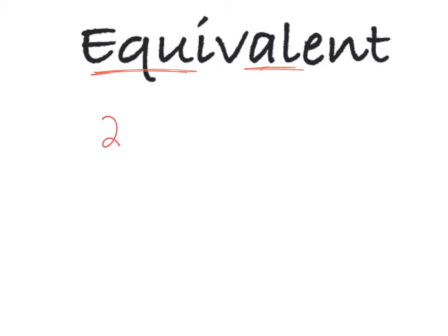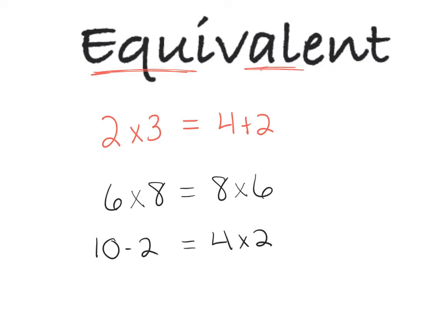For example, you could say 2 times 3 is equivalent to 4 plus 2 because they both equal 6. They're equivalent to one another. You could also say something like 6 times 8 is equivalent to 8 times 6. They don't look exactly the same, but they both represent the value of 48. You could also have something like 10 minus 2 is equivalent to 4 times 2. Once again, they both equal 8 and so they are equivalent to one another.